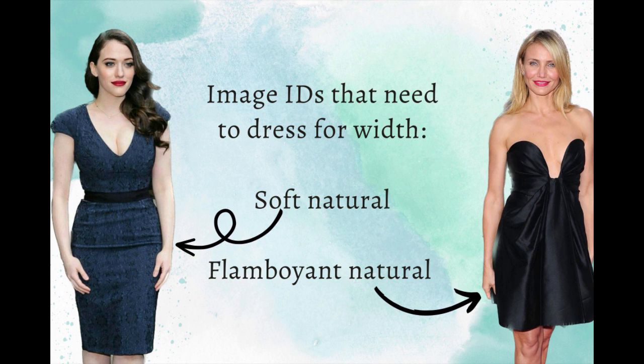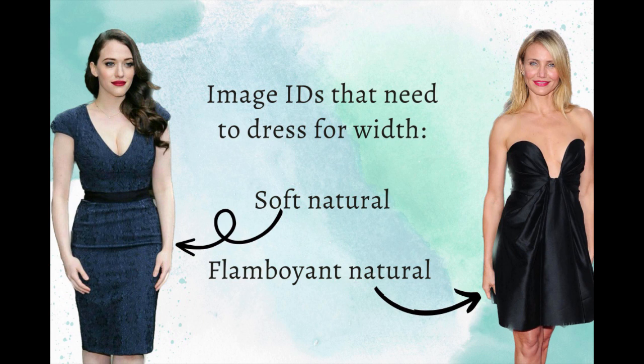First of all, let's see what image identities in the Kibbe system are going to have width — and it's going to be soft natural and flamboyant natural. For some reason, I keep seeing people being confused about flamboyant gamine and if they can have width. But the answer is no; gamines are supposed to be petite, which is the opposite of width.